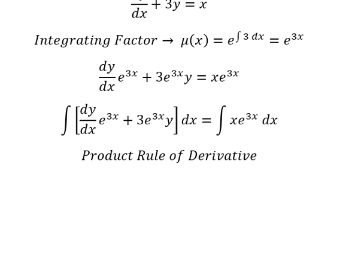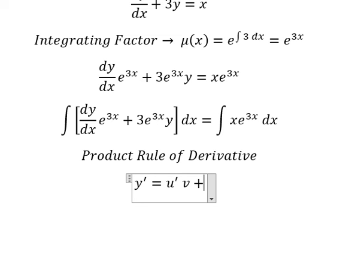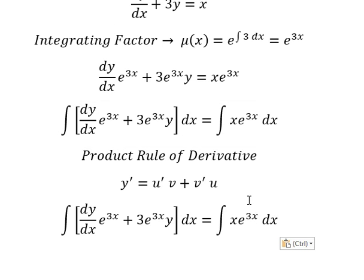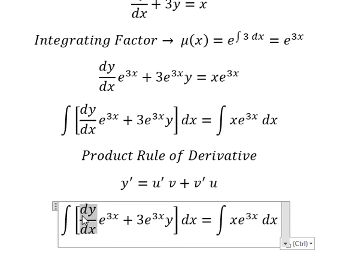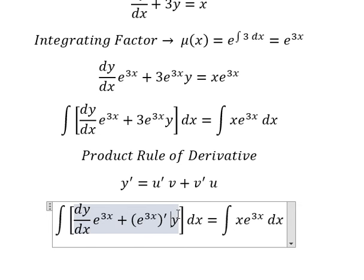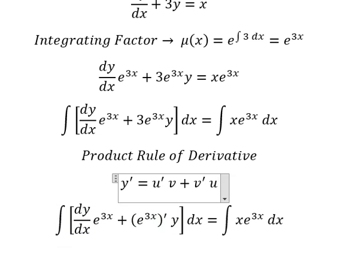Next, we need to apply the product rule of derivatives. The first derivative of the product u·v equals the first derivative of u multiplied by v, plus the first derivative of v multiplied by u. If we look carefully, this part is the first derivative of u multiplied by v, and this part is the first derivative of v multiplied by u. So when we integrate, we get u·v.